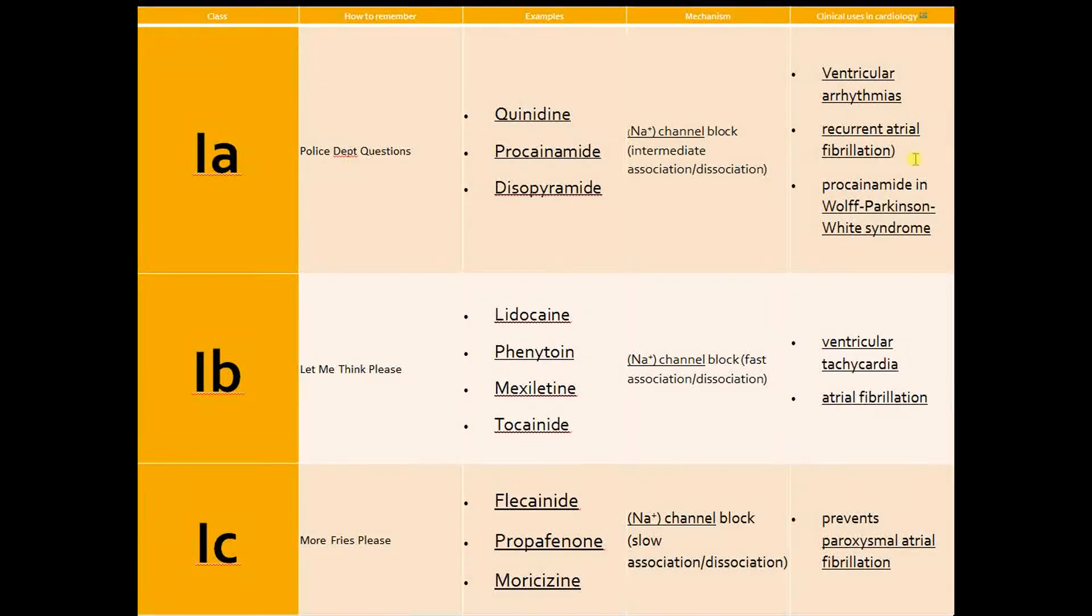Class 1A includes quinidine, procainamide, and disopyramide. The best way to remember is the mnemonic 'Police Department Questions' - P for procainamide, D for disopyramide, Q for quinidine. The main use of these medications is in ventricular arrhythmias as well as atrial fibrillation. Procainamide specifically can be used in Wolff-Parkinson-White syndrome.